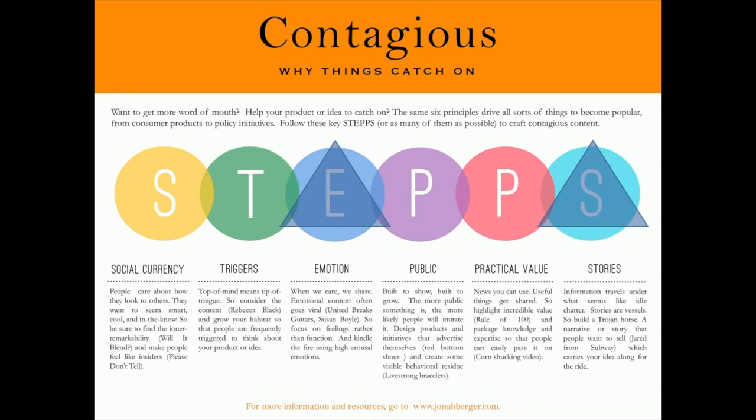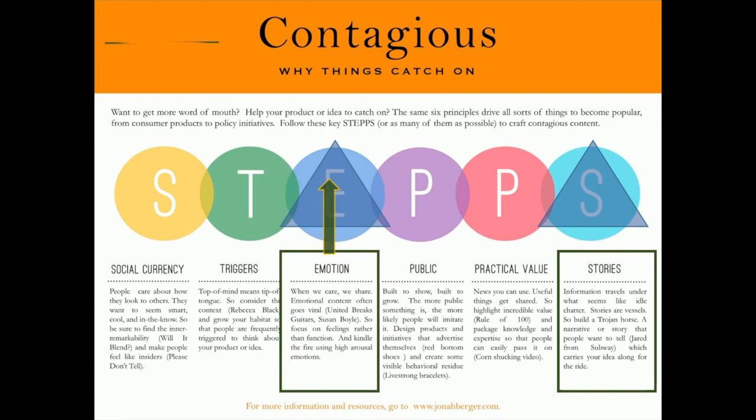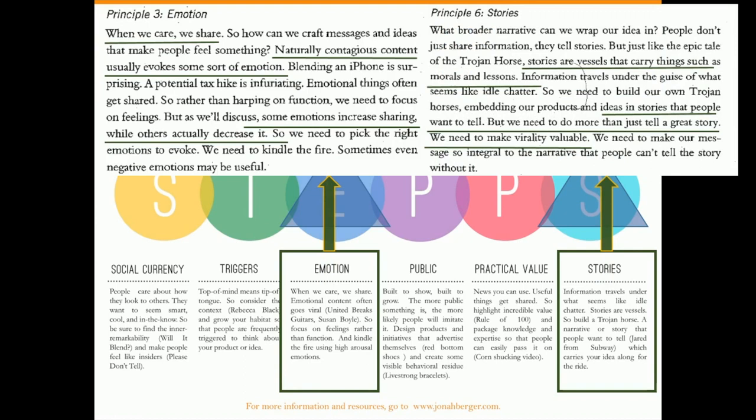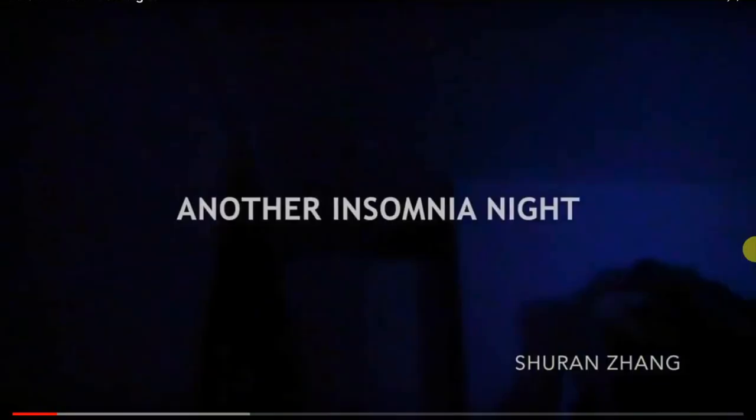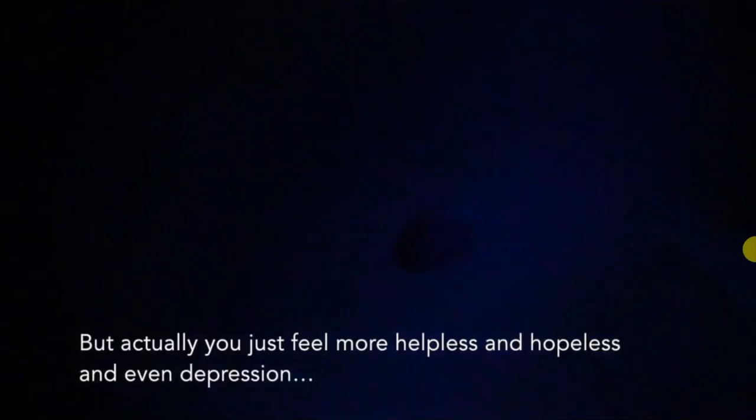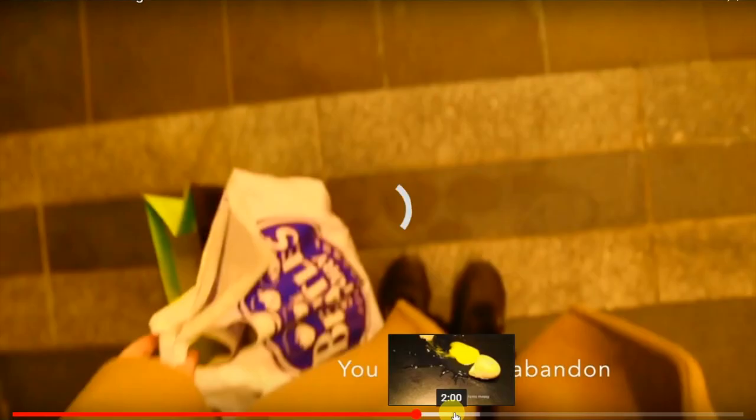By contrast, the Media Society video is more focused on story and emotion aspects. From Berger's article, it shows that naturally contagious content usually evokes some sort of emotion. This video intends to evoke sympathy and arouse audience awareness about mental health. However, in reality, with the limitation of shooting, editing and some practical factors, the final effect did not match the original goal. Instead of sympathy, it makes the audience feel sad and depressed.